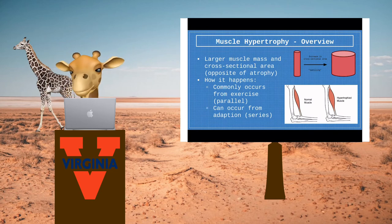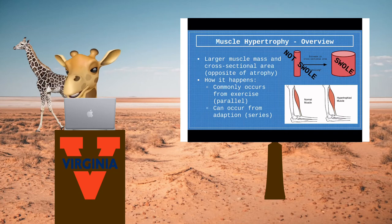Muscle hypertrophy is when the muscle mass and cross-sectional area increase. The cylinder to the right represents a muscle before hypertrophy. It swells and then it has experienced hypertrophy.